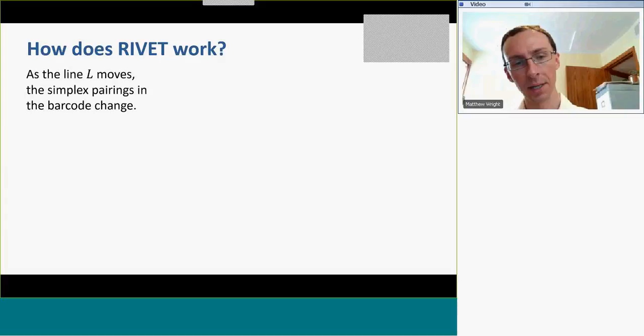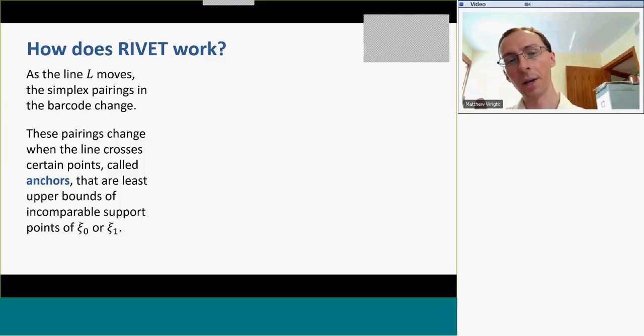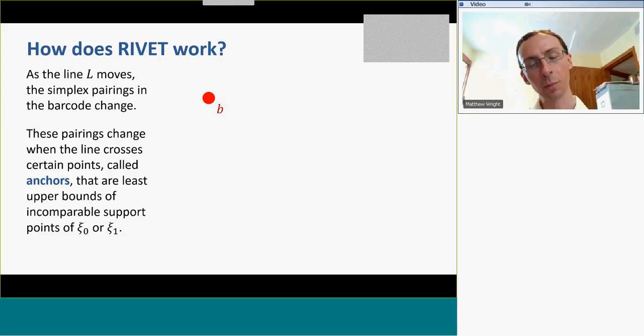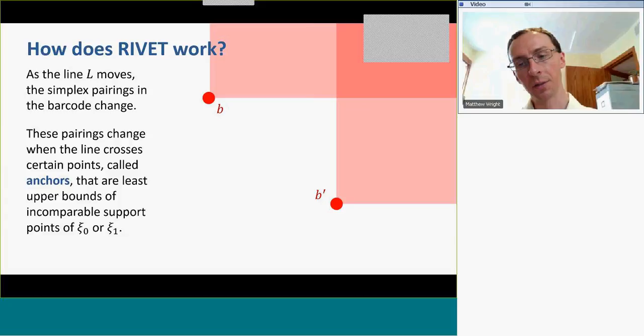We need to understand how these pairings change. The pairings change whenever the line crosses certain points, called anchors. An anchor point occurs when the ordering of the projections (pushes) of two support points of the Betti numbers onto the line switches. Specifically, the anchor is the least upper bound, in a geometric sense, of two points — one from ξ₁ — and that's the place where the ordering of their projections on the line switches.